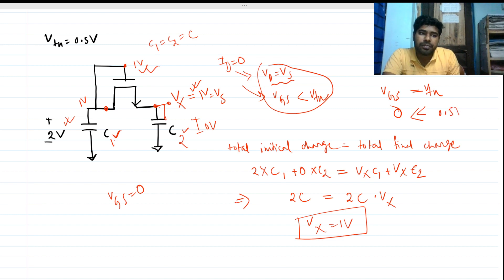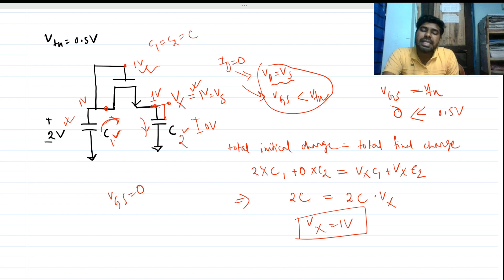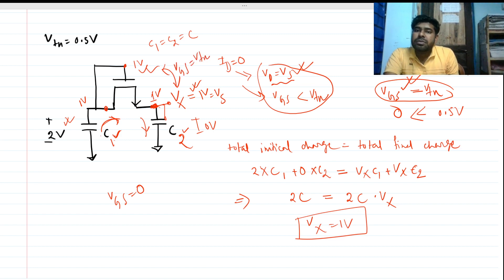The threshold voltage Vtn is 0.5V, and VGS = 0 is very much less than that. What is actually happening is: C1 is discharging while C2 is charging. Before C2 reaches 1 volt, the MOSFET already turns off because VGS becomes less than Vtn. So C2 cannot charge all the way to 1 volt — it will charge to some voltage less than 1V, at which point VGS equals Vtn and ID becomes zero, giving us steady state.